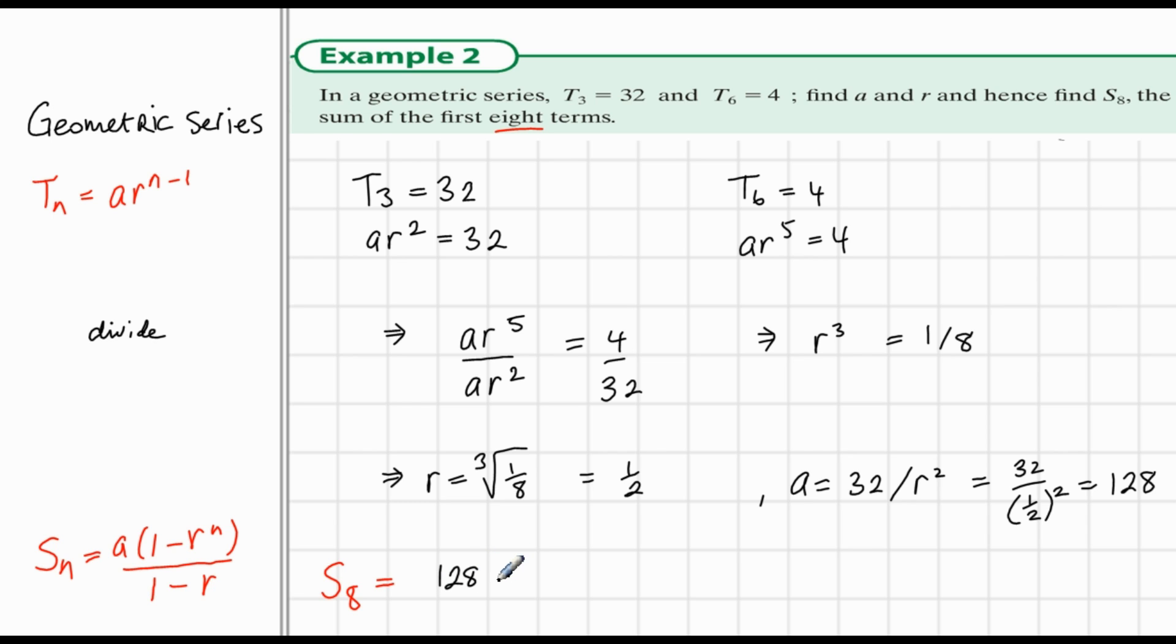So using the formula, we have a is 128, r is a half. That's a half to the power of 8, and it's all divided by 1 minus r. So you can evaluate this. You can use a calculator to help you. And this works out to be 255. And that's how you do this question.